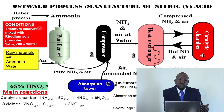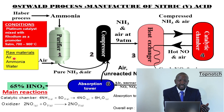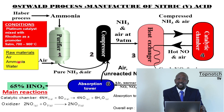We are talking about the Ostwald process. In any industrial process, the first thing to understand is what are the raw materials and what are the conditions. The main raw materials in the Ostwald process are: we need air, we need ammonia, and we need water. Those are the main raw materials — air, ammonia, and water.